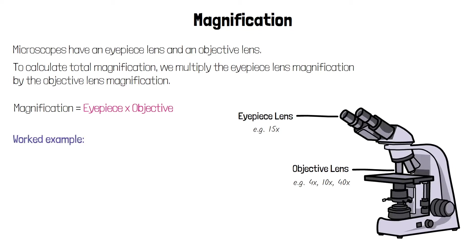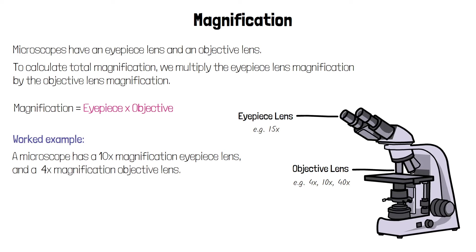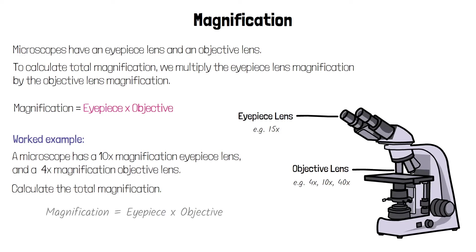For example, a microscope has a 10 times magnification eyepiece lens and a 4 times magnification objective lens. Calculate the total magnification. Magnification equals eyepiece times objective. The eyepiece magnification is 10 times and the objective lens is 4 times, so the total magnification is 40 times.